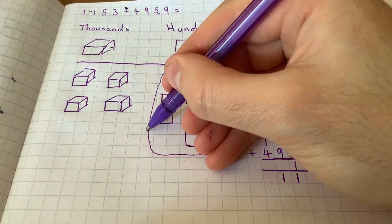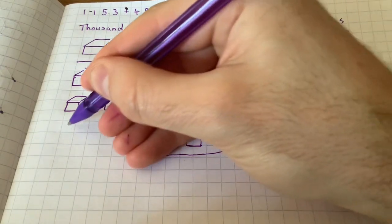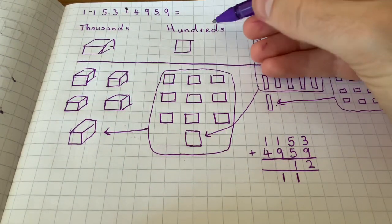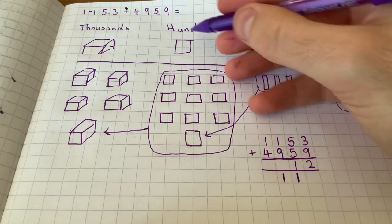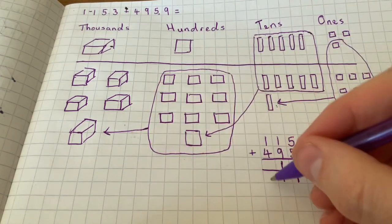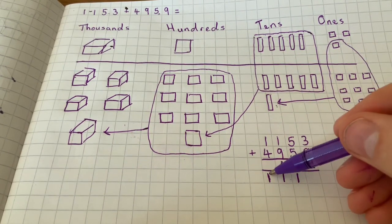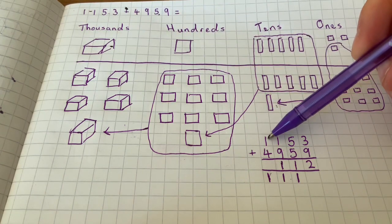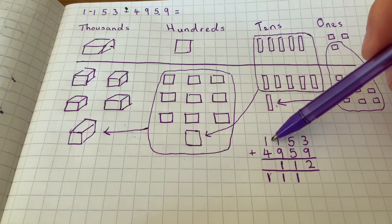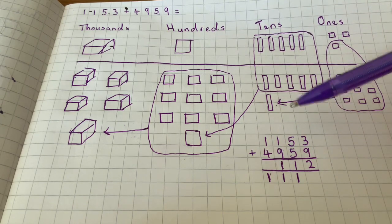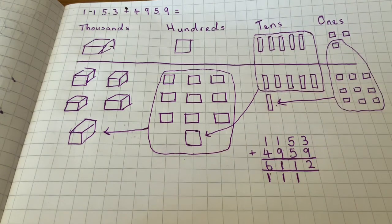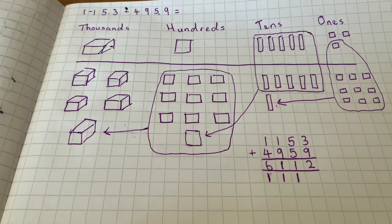And so my ten hundreds regroup, and then they make a thousand. So going back to my hundreds now, I've got one hundred left there. I've just regrouped and made a thousand there. So my final part of this, I've got one thousand add four thousand add one thousand. So one thousand add four thousand is five thousand, then add the one makes six thousand. So my answer is six thousand one hundred and twelve.